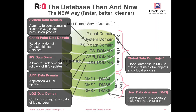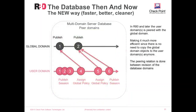Each domain management server is located on a separate user data domain with its own user objects, rules, services, etc. In R80 and later, the user domain is now paired with the global domain, creating a much faster, better, and cleaner way of assigning the global domain to the user domain. This makes it much more efficient since there's no need to copy the global domain objects anymore down to the user domain.